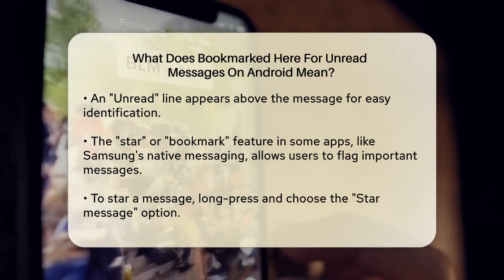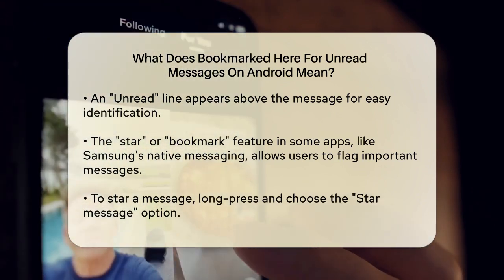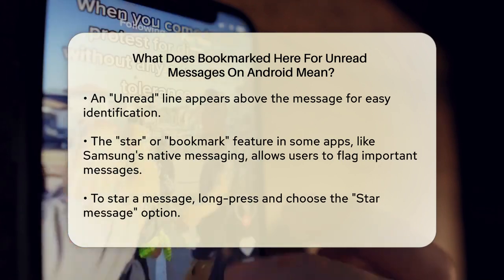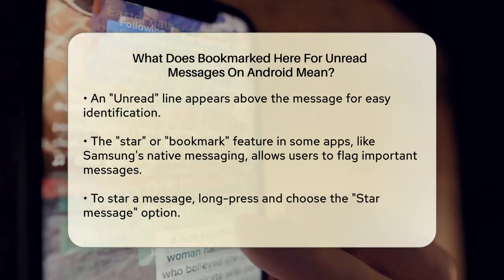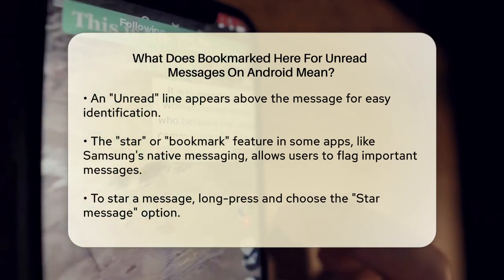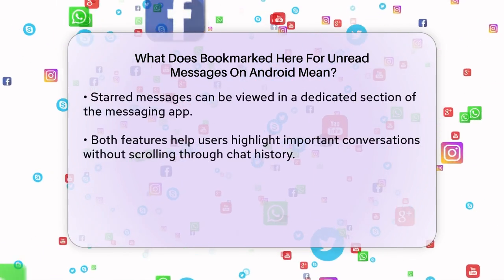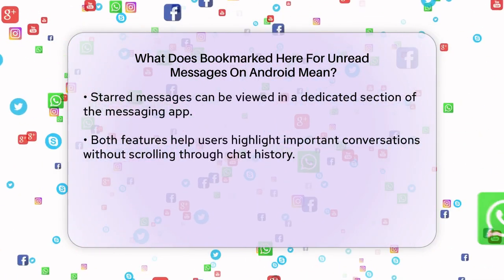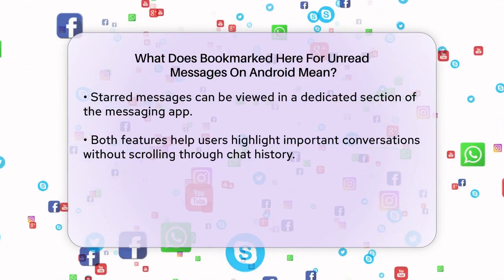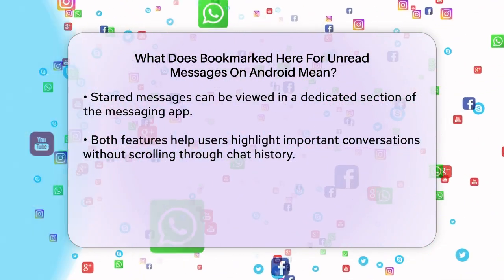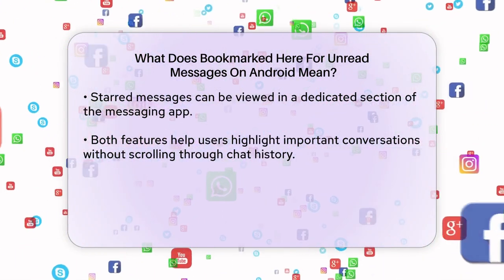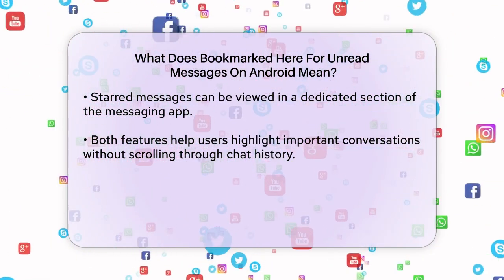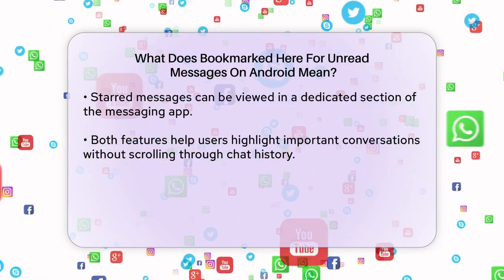The term 'bookmarked here' is similar but slightly different. In some messaging apps, like the native messaging app on Samsung devices, you can star or bookmark a message. This is essentially a way to flag the message so you can quickly find it later. To star a message, you typically long press on it and select the 'Star Message' option. This adds a star to the message, and you can view all your starred messages in a separate section of your messaging app.